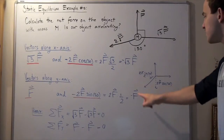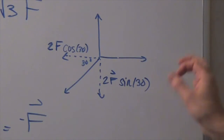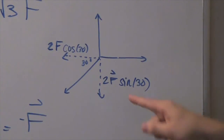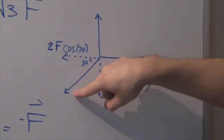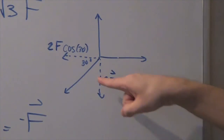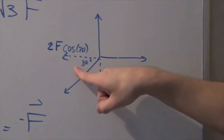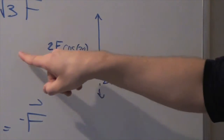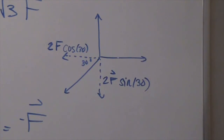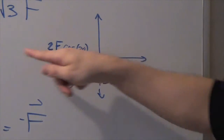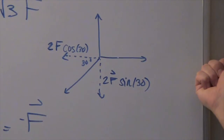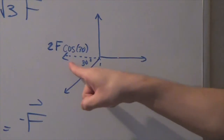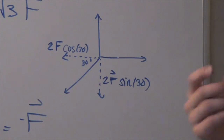Let's zoom in on this section. In this diagram, we want to find the component vectors of the 2F force. It has a magnitude of 2F and is at 150°, which means this angle must be 30°, because 150 and 30 must add up to 180° — a straight line along the x-axis. We assume positive x goes to the right and positive y goes upward, and we'll use trig functions to find the component magnitudes.